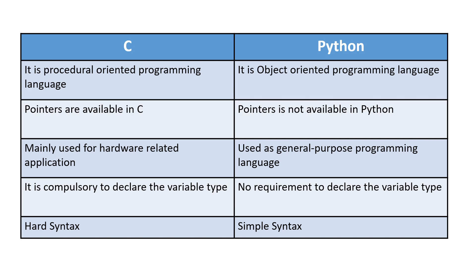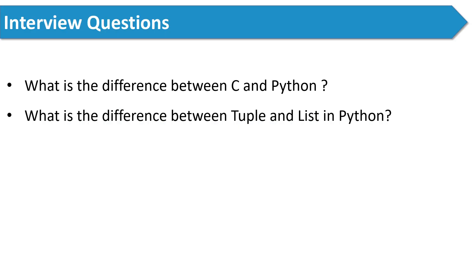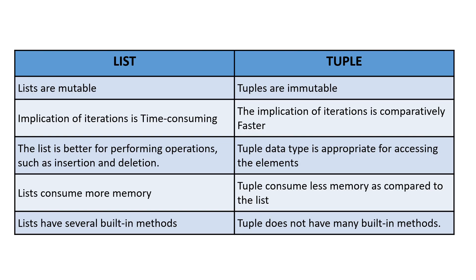The next question is: what is the difference between tuple and list in Python? You can say lists are mutable while tuples are immutable. Also, lists consume more time while tuples are comparatively fast, and so on. In this way you can answer this question.